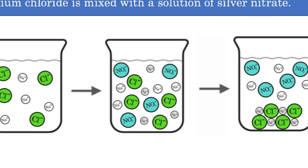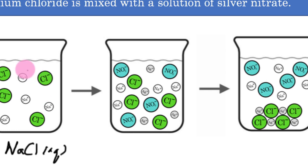So I would write silver nitrate as aqueous, because it has nitrate and silver. When I have silver nitrate and it's aqueous, the nitrate and the silver are always going to dissolve. When an ionic compound dissolves, it dissociates into its ions. Over here, I mix it with sodium chloride, which is also aqueous. When sodium chloride dissolves in water, it dissociates into the ions that make it up. So these are the two solutions I have.